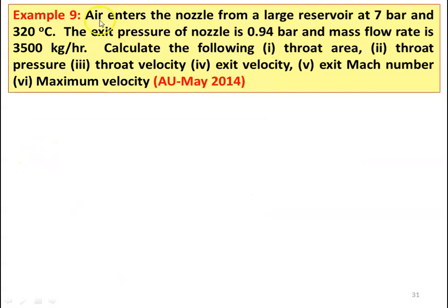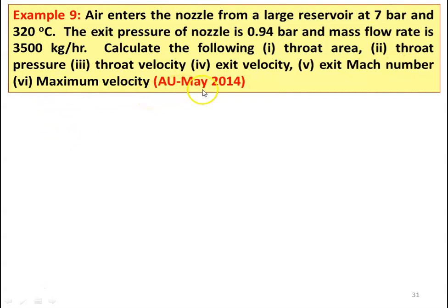Example number 9. Air enters the nozzle from a large reservoir at 7 bar and 320 degree Celsius. The exit pressure of the nozzle is 0.94 bar and the mass flow rate is 3500 kilograms per hour. Calculate the following: throat area, throat pressure, throat velocity, exit velocity, exit Mach number and the maximum velocity. This is from May 2014 question paper.